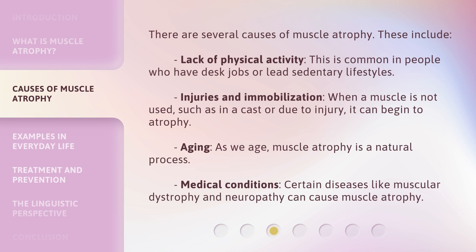There are several causes of muscle atrophy. These include: lack of physical activity, which is common in people who have desk jobs or lead sedentary lifestyles; injuries and immobilization — when a muscle is not used, such as in a cast or due to injury, it can begin to atrophy; aging — as we age, muscle atrophy is a natural process; and medical conditions such as muscular dystrophy and neuropathy.